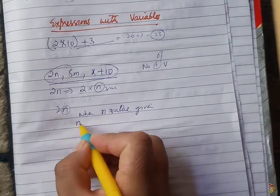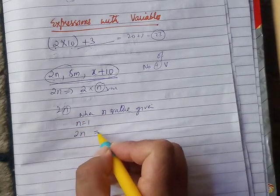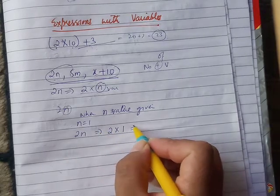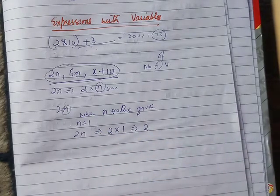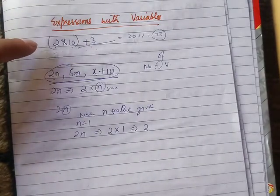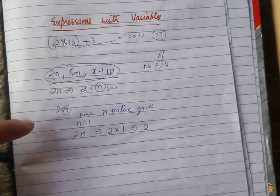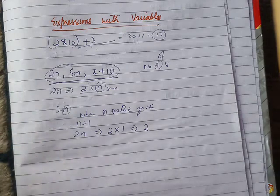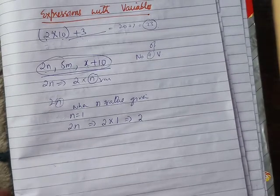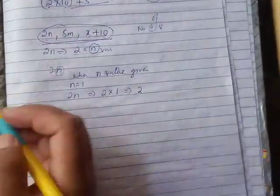For example, n equals to 1. Then 2n, we can write as 2 into n. 2 into n, if n is 1, then 2 times 1 is 2. Then the value will come. Most important is that in arithmetic we can directly solve, but in expression with variables we cannot directly solve. Unless the value of the variable is given, then we can solve the expression. Then we can form the expression.